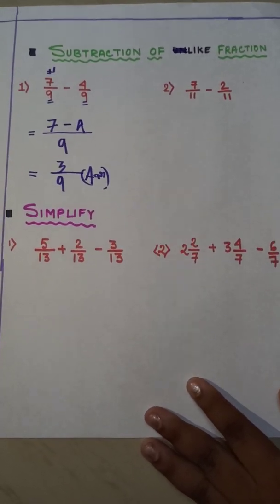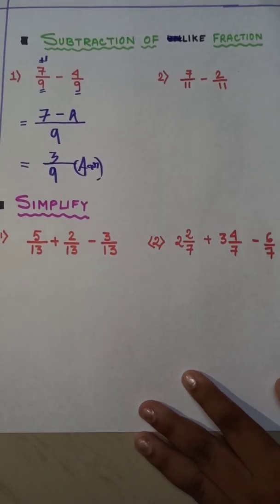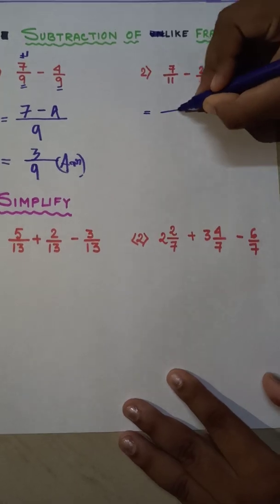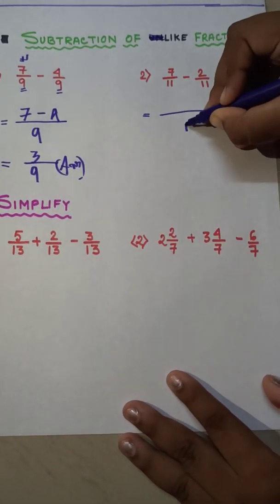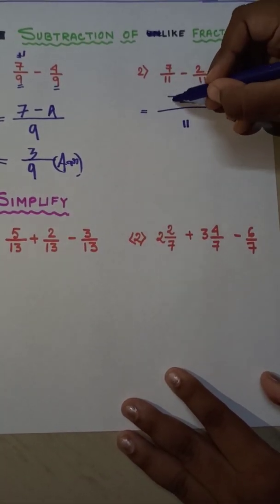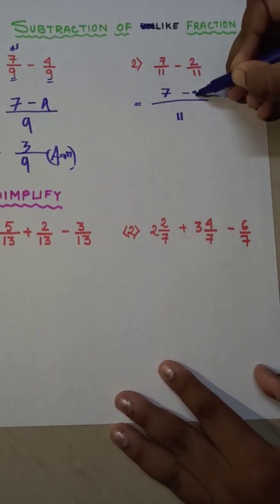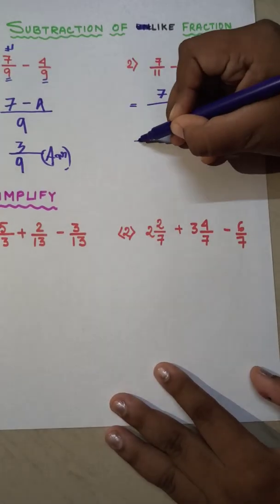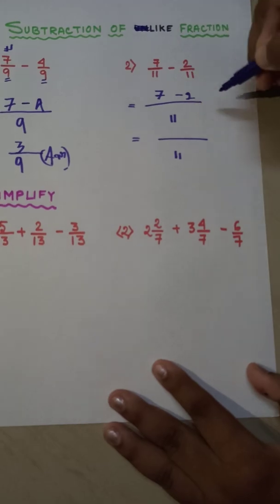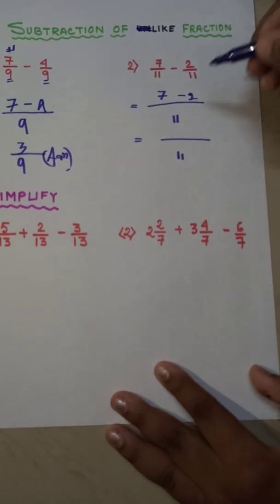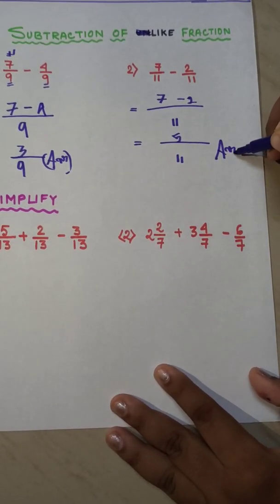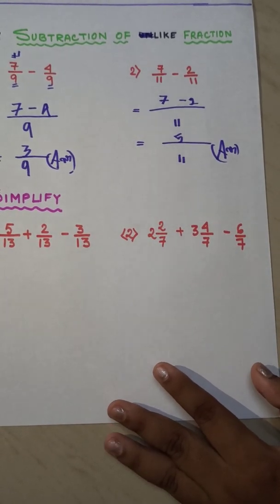Now the next one — exactly the same. We draw a big line, write 11 at the denominator, and then the numerator portion: 7 minus 2. 7 minus 2 is 5. So our answer will be 5 by 11.